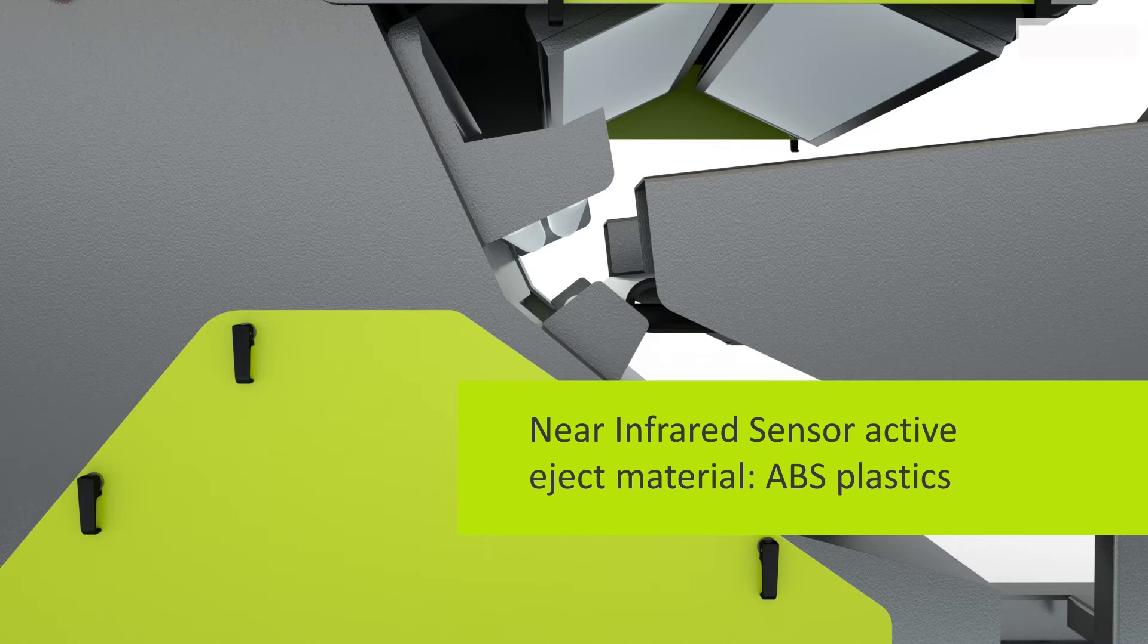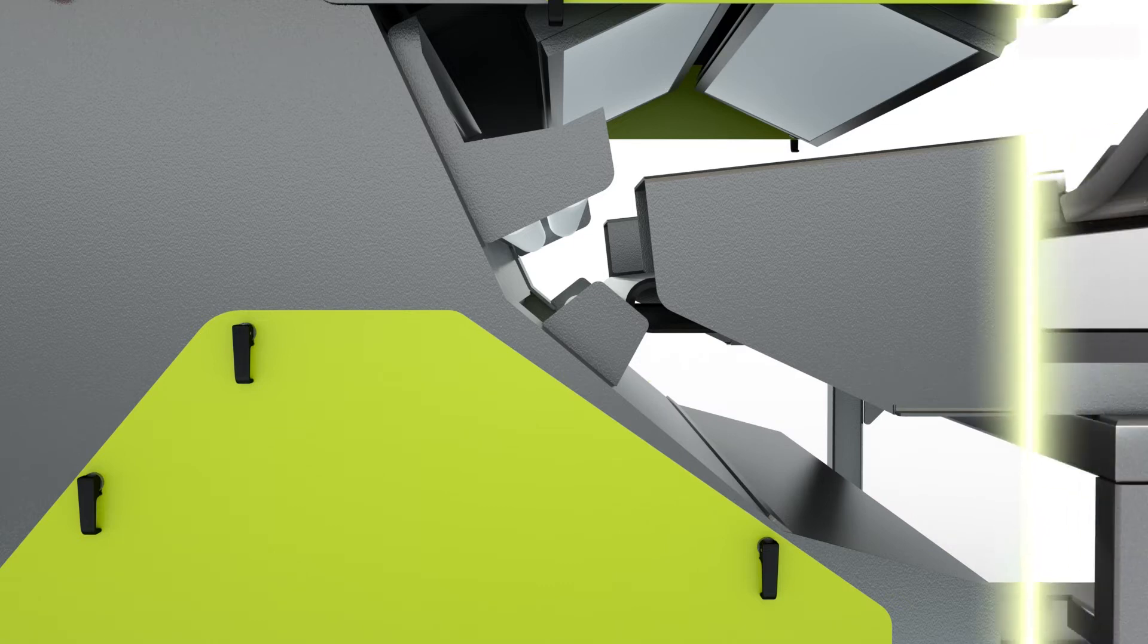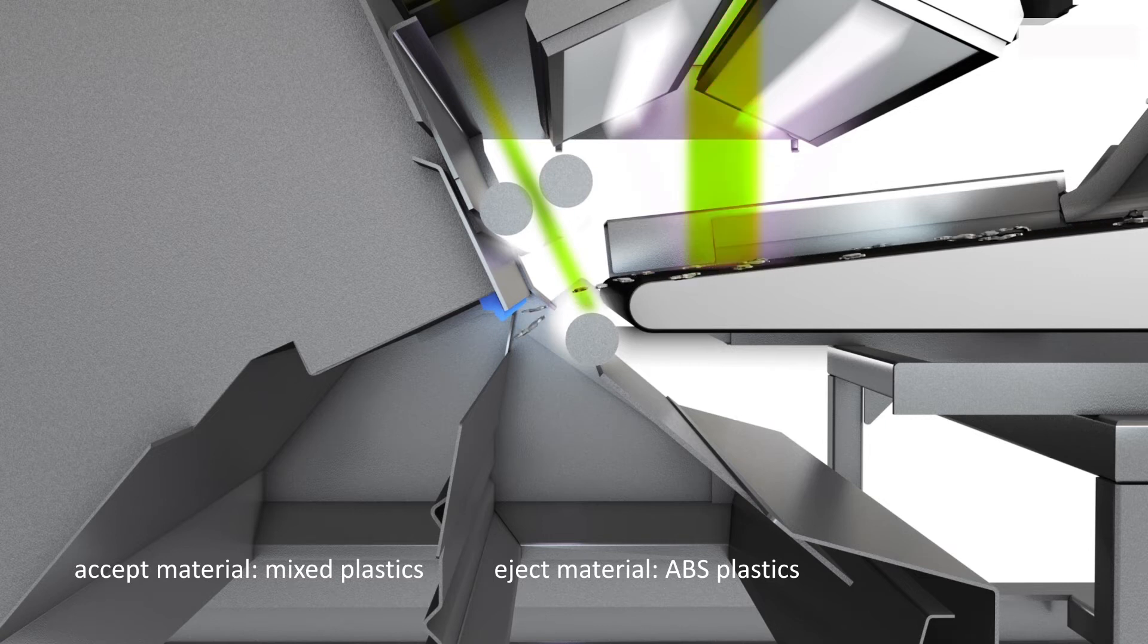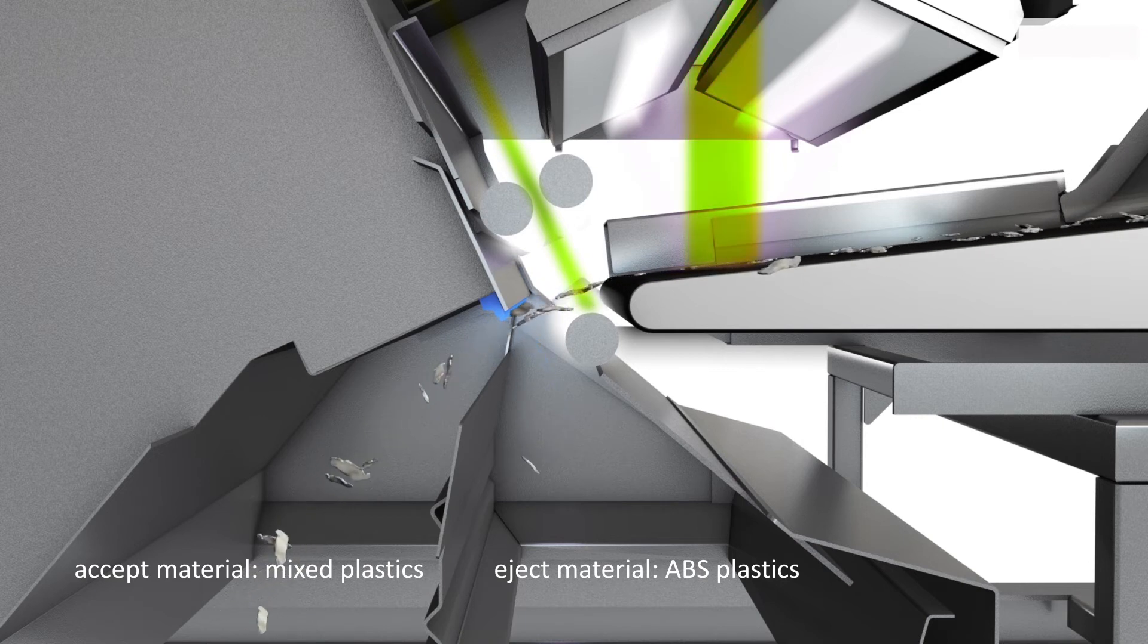In the last application we present, we use the near-infrared sensor for plastic separation. In this example, the near-infrared sensor detects ABS plastics, which are subsequently separated from the material stream. All other plastics remain in the mixed plastics fraction.